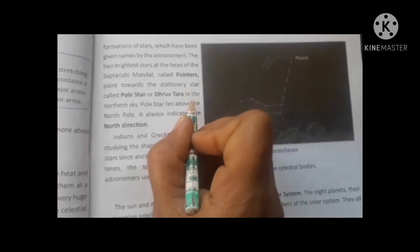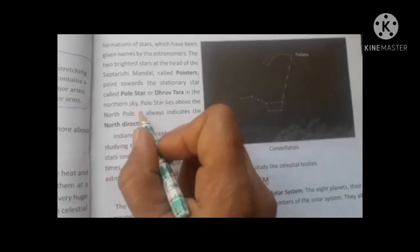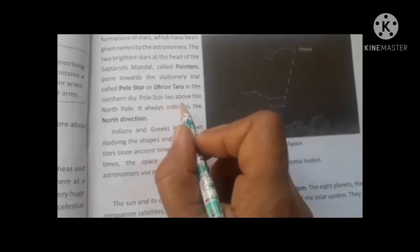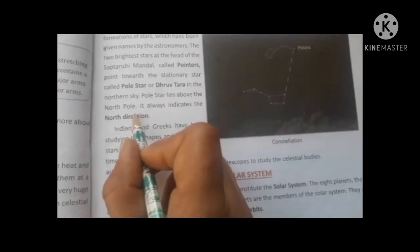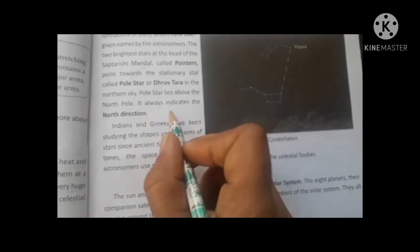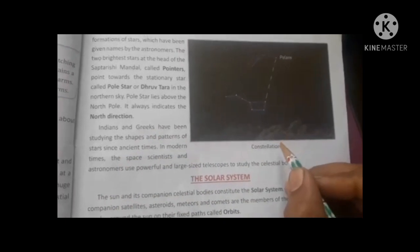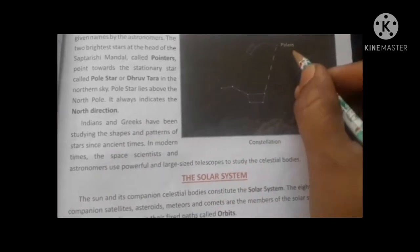The stationary star is in the northern sky. The Pole Star lies above the North Pole. The North Pole always indicates the north direction, which is based on the constellation, which has this shape.